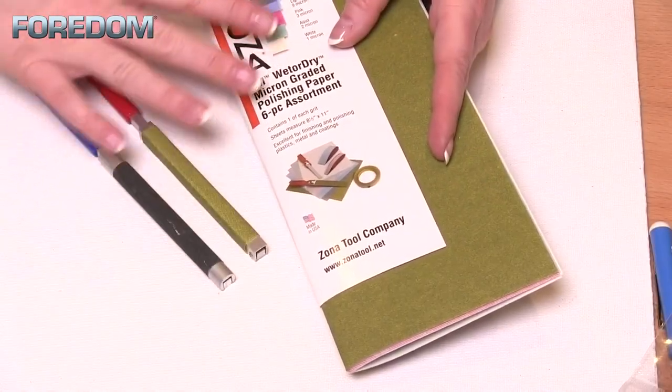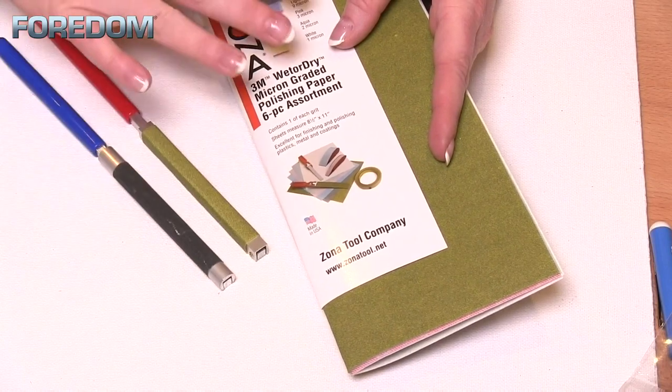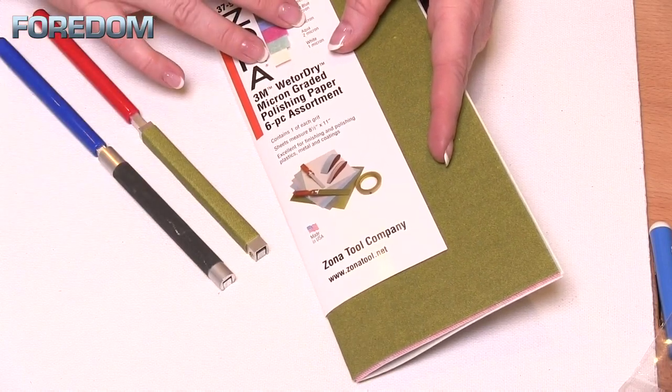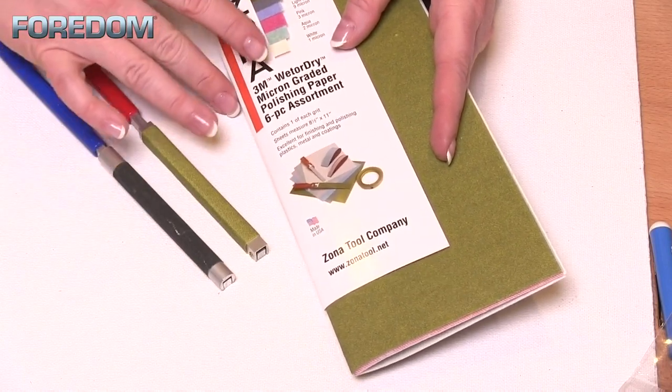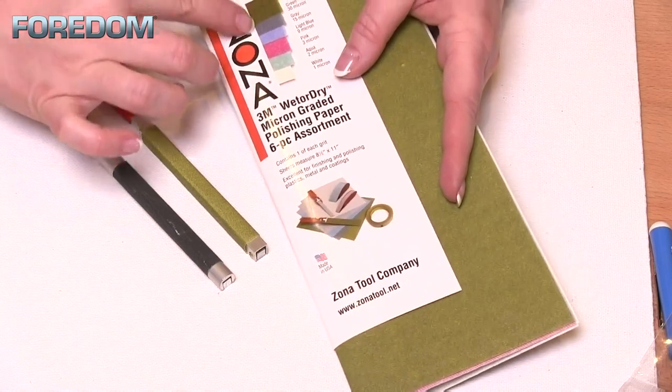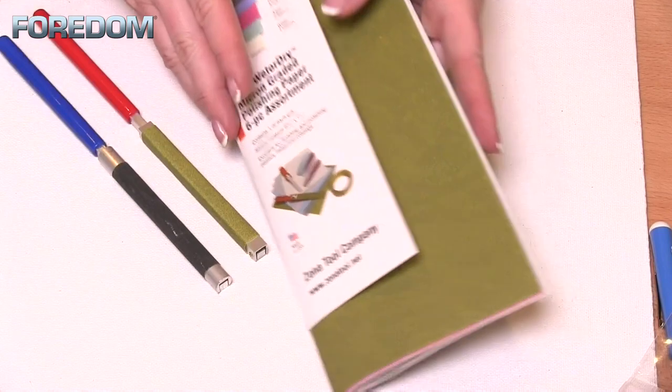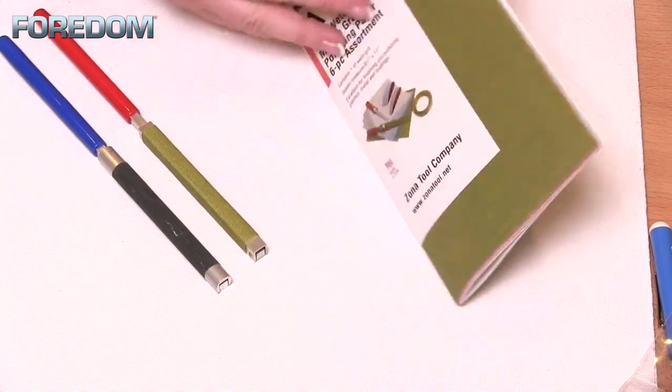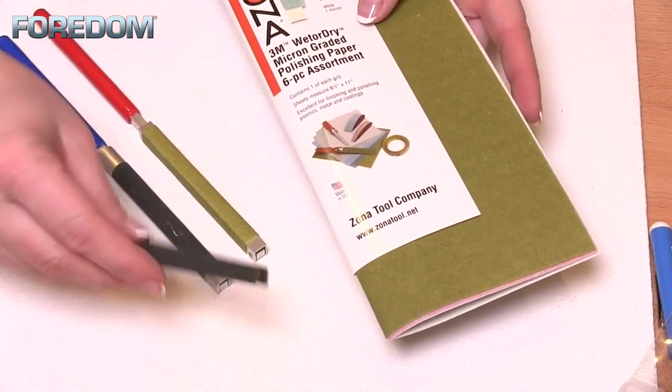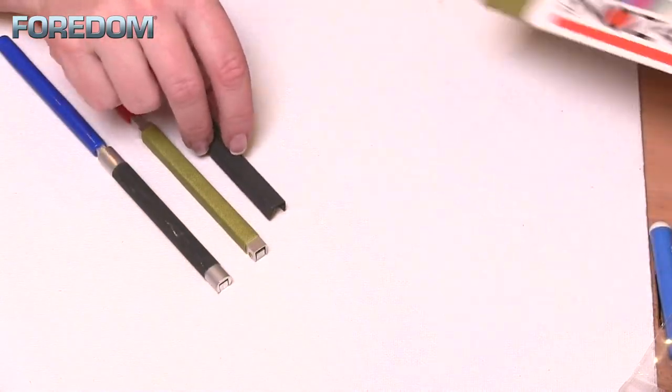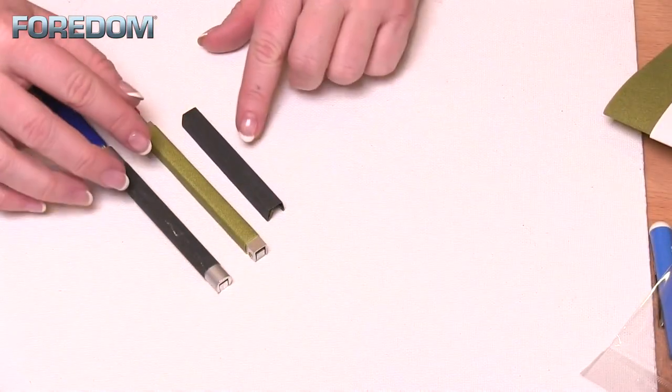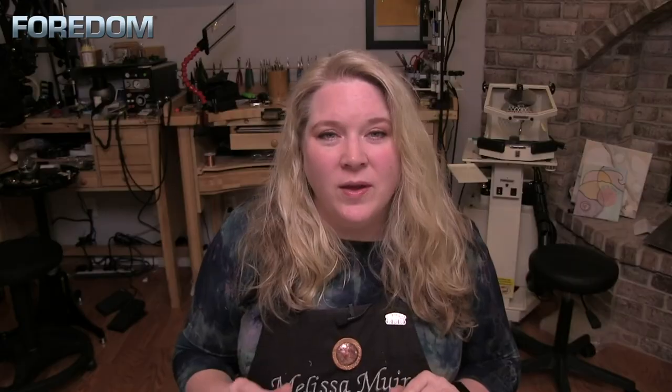Now, in the case of the example that I just showed you, I used one of the polishing papers also available from Fordham. I like this particular pack because it has grits going from 30 micron all the way down to one micron, so those are nice because they're a little bit more flexible. But as you can see with what came installed on our pieces, you can use regular sandpaper as well.